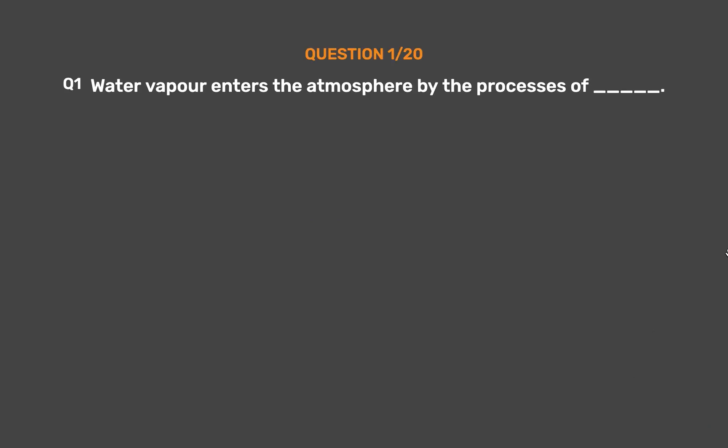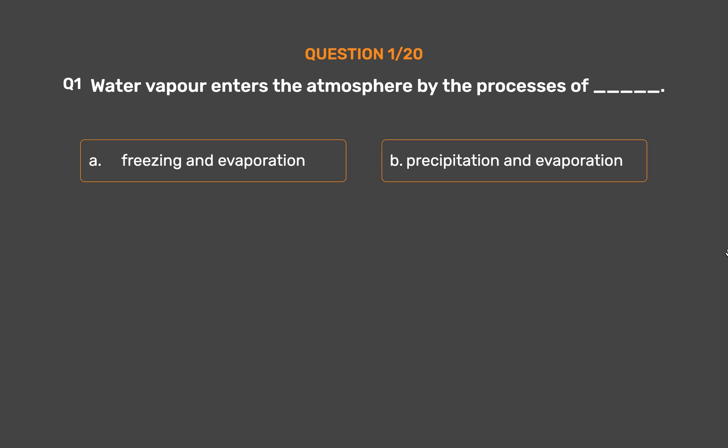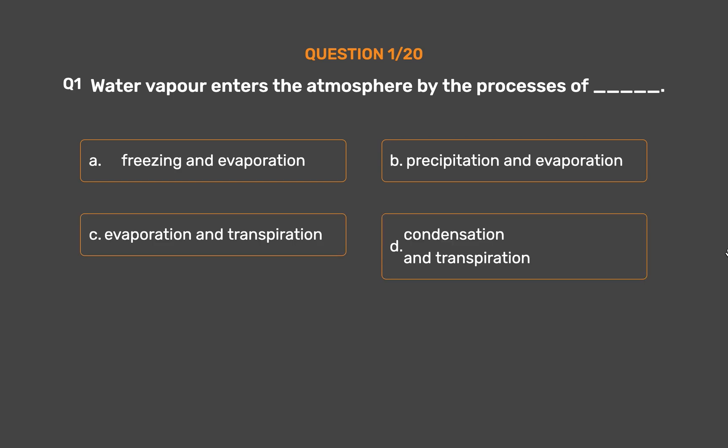Question number 1. Water vapor enters the atmosphere by the processes of _____. Option A: Freezing and evaporation. Option B: Precipitation and evaporation. Option C: Evaporation and transpiration. Option D: Condensation and transpiration.